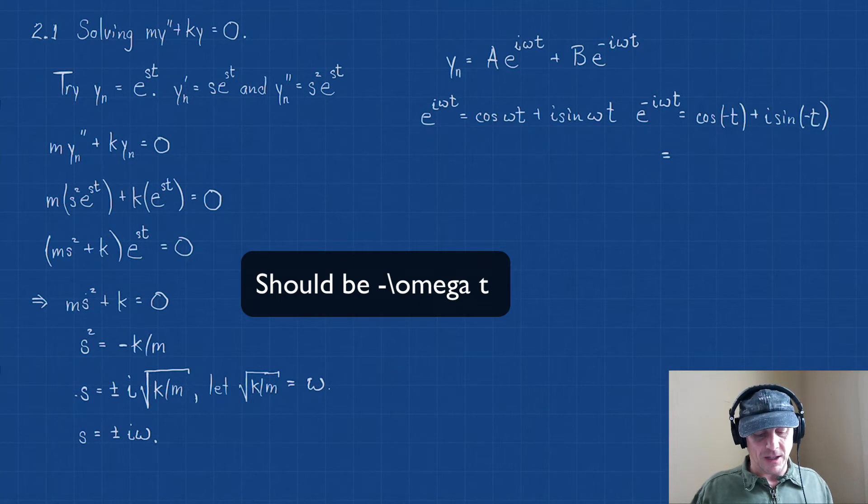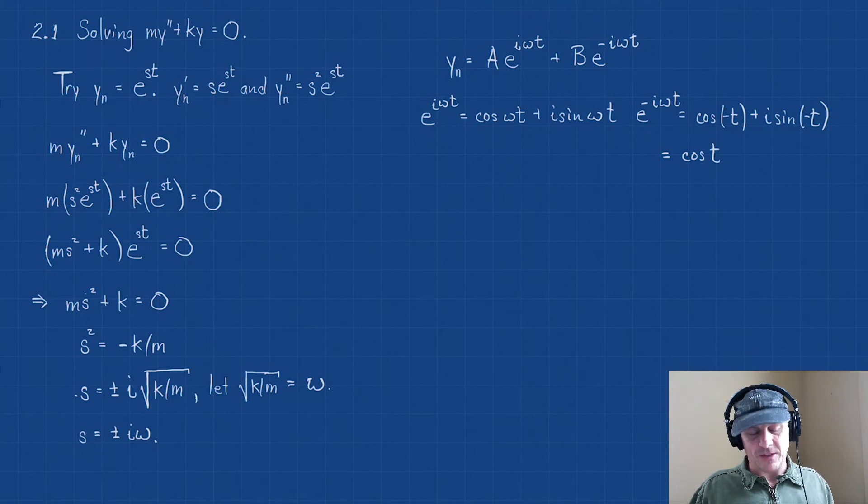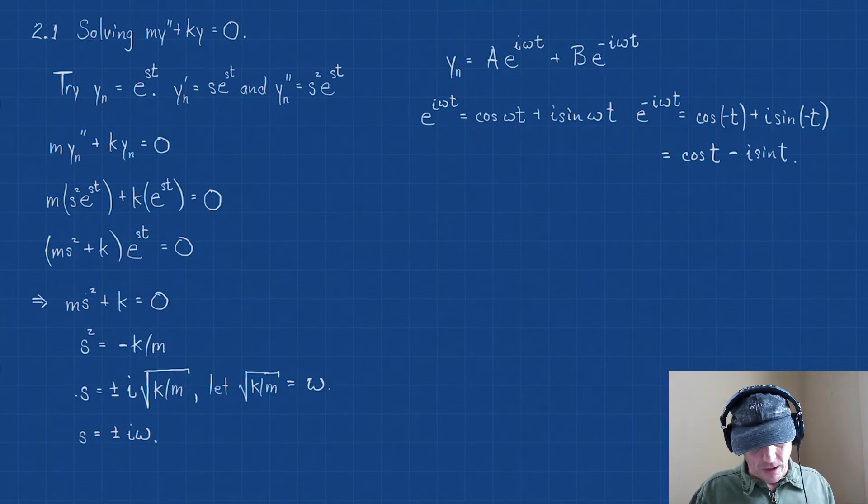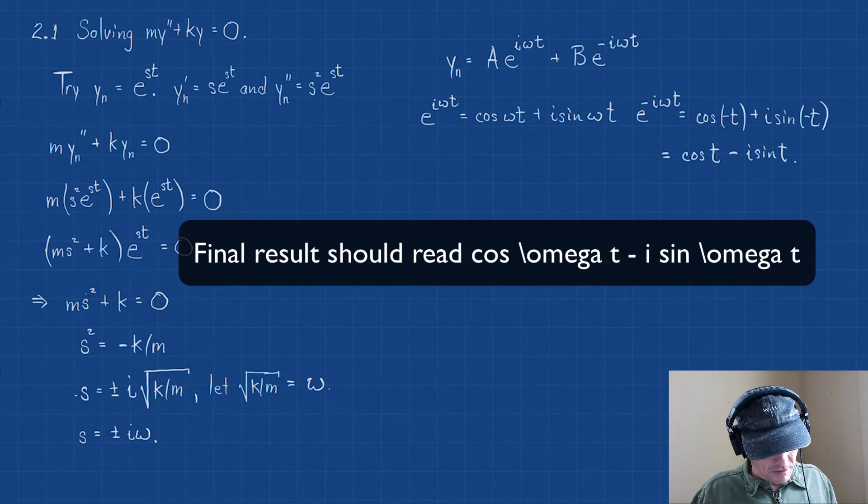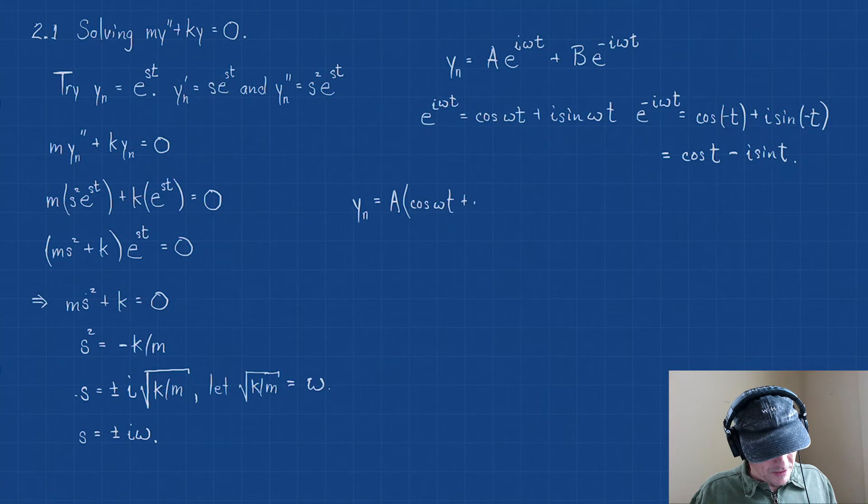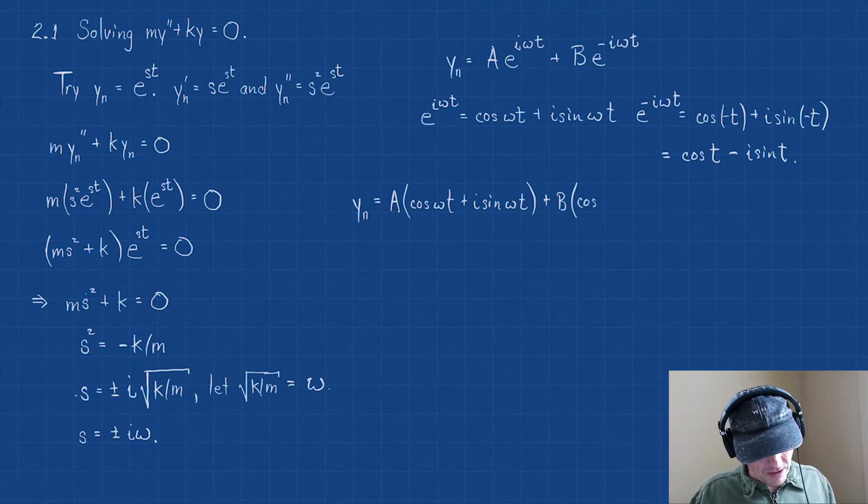And you might also recall that e^(-iωt) = cos(-ωt) + i·sin(-ωt). But the cosine of negative t, because cosine is an even function, this is the same as cos(t). Sine is an odd function, so this becomes -i·sin(t).